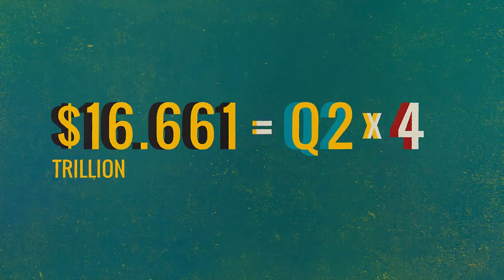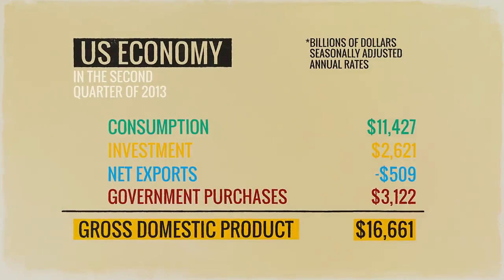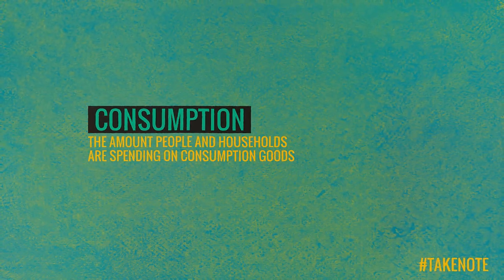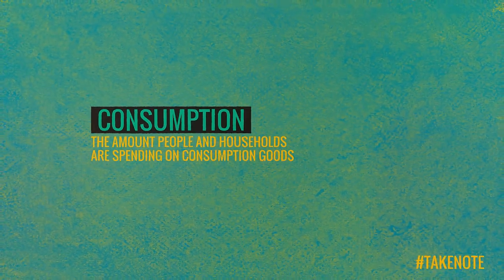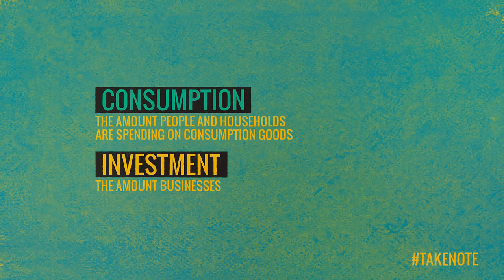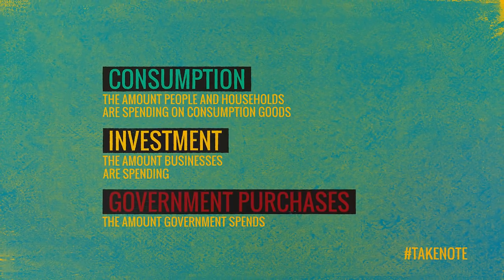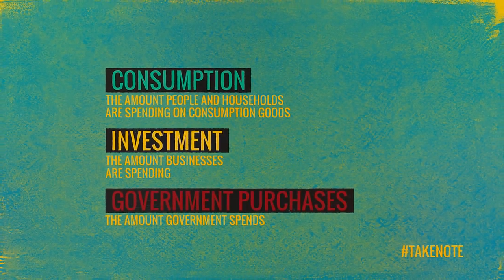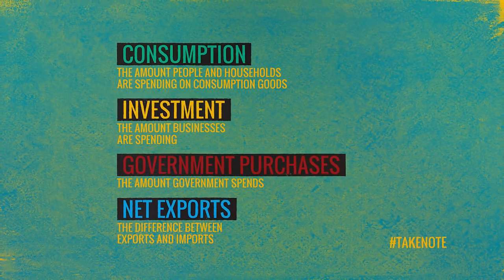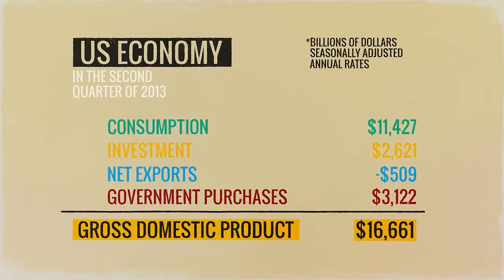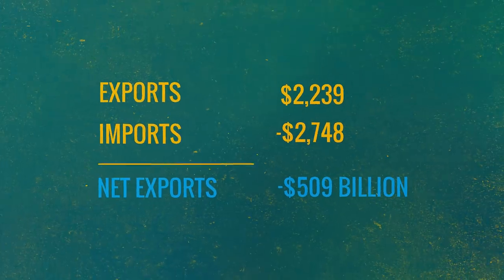By multiplying by four, you get an annual rate. Now let's consider the components of gross domestic product. One part is consumption — what households are spending on consumption goods. There's the amount that businesses spend, called investment. Then there are government purchases — what government spends. And there's something that has to be subtracted: net exports, represented by the difference between exports and imports. The $509 billion with a minus sign is exports minus imports — exports are $2,239 billion and imports are $2,748 billion, so the difference is $509 billion.